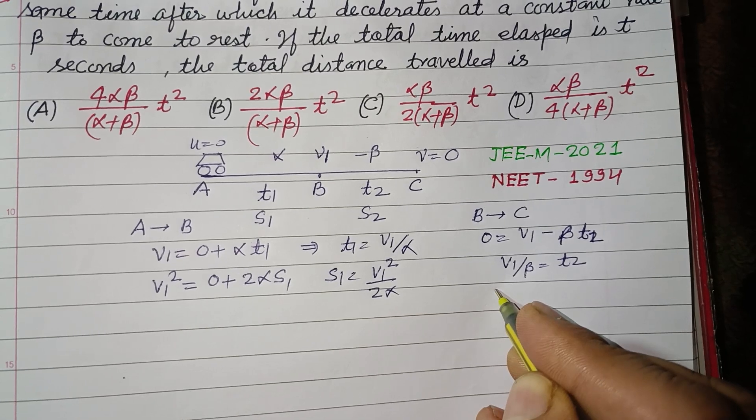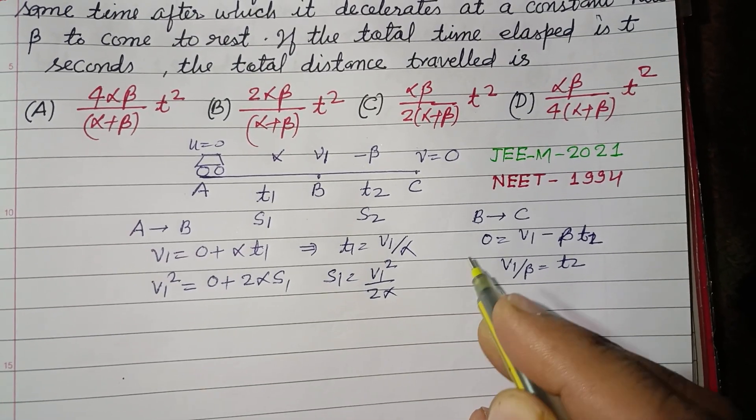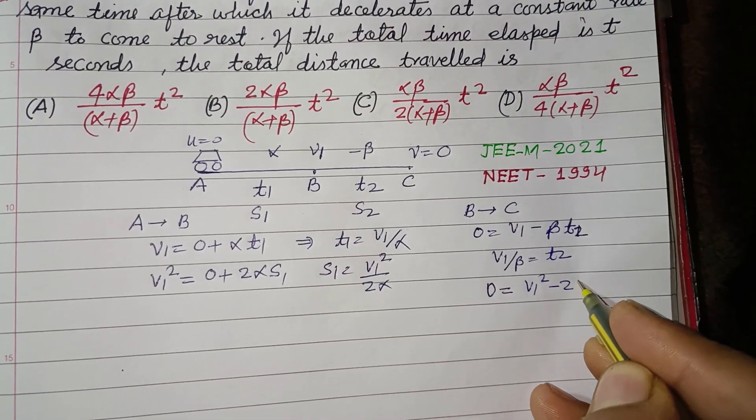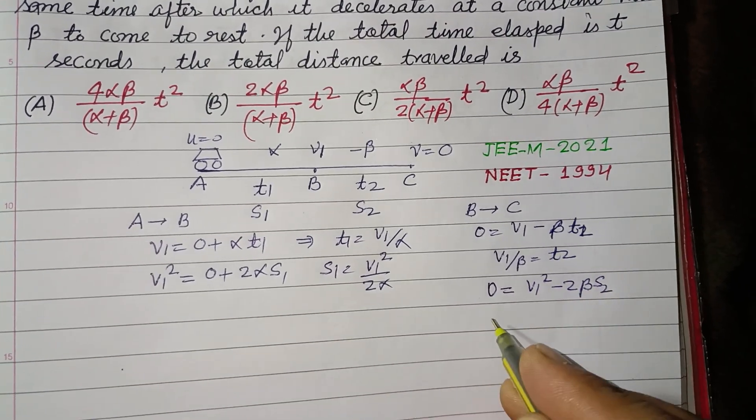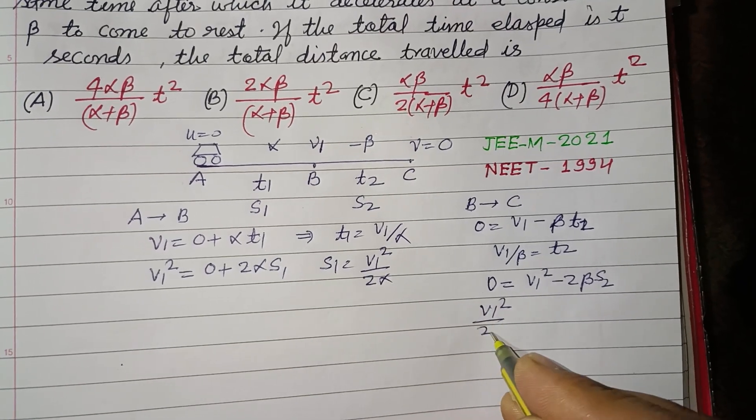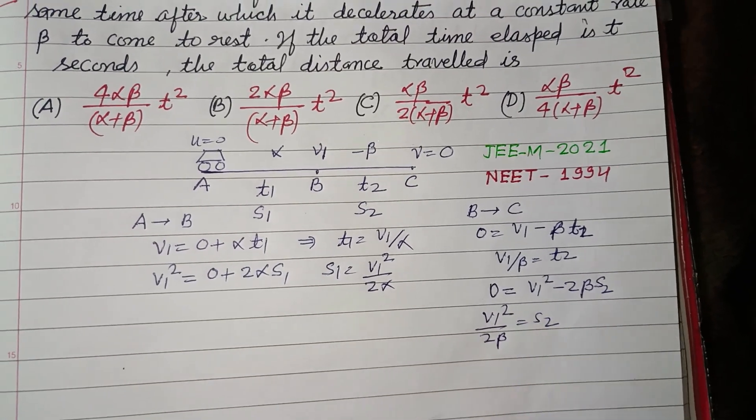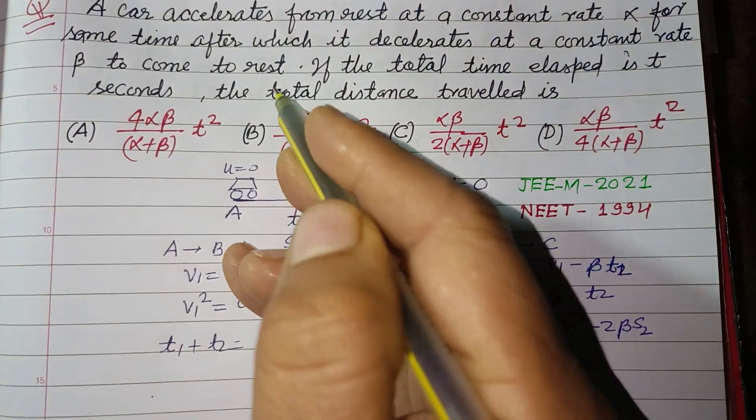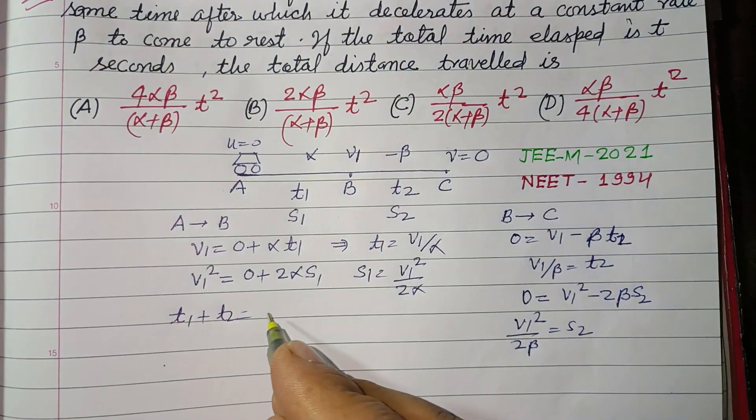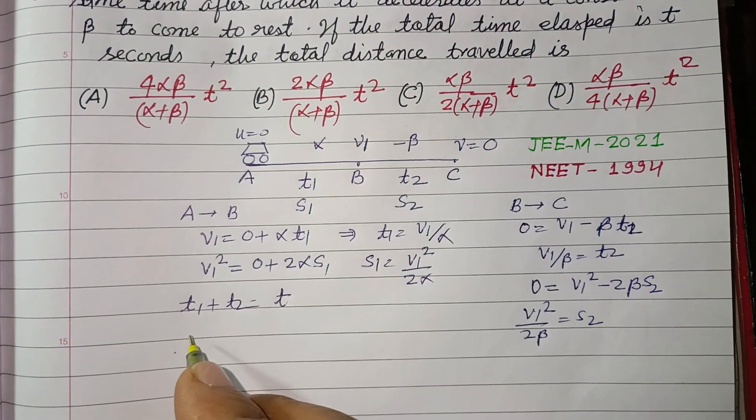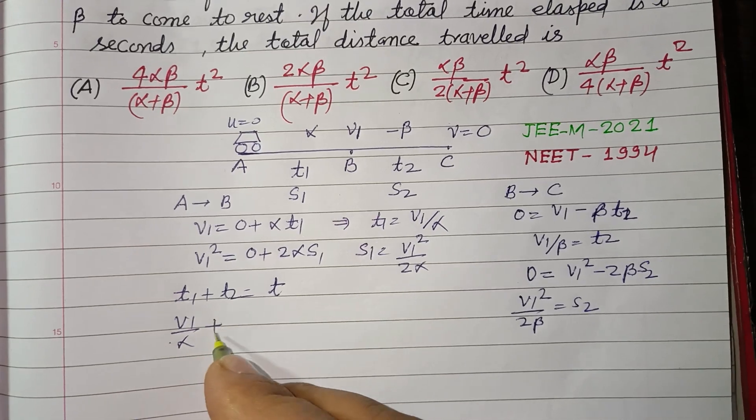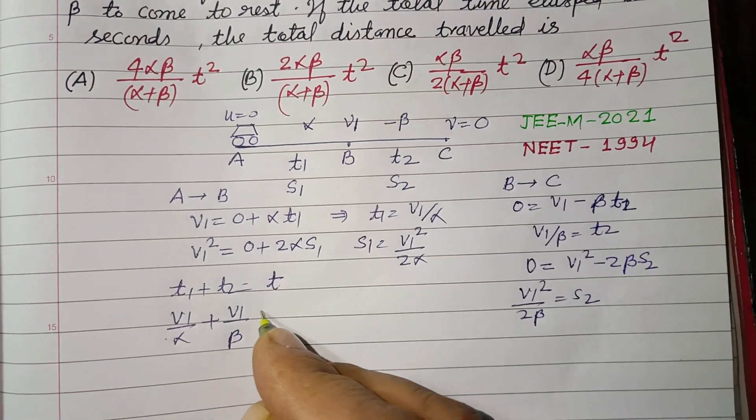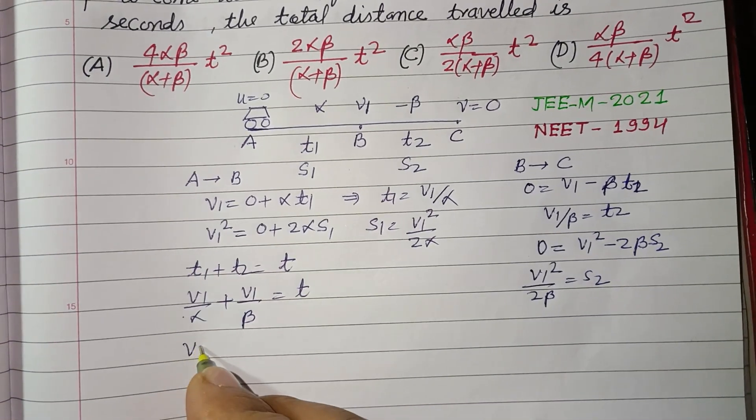0 = v₁² - 2βs₂, so v₁²/(2β) = s₂. Now t₁ + t₂, the total time given here, is t. Putting these values: v₁/α + v₁/β = t.